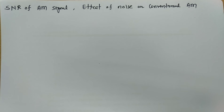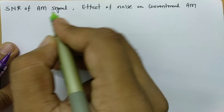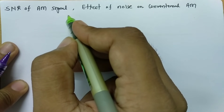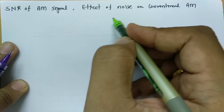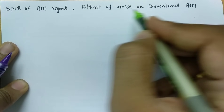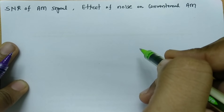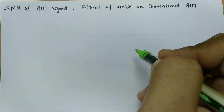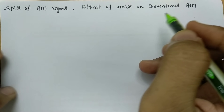Welcome to the analog communication playlist. In this session, I'll be explaining the signal-to-noise ratio of an amplitude modulated signal at the receiver side, and I'll explain what the effects of noise are on conventional AM. Let us begin this session with: what is an AM signal?